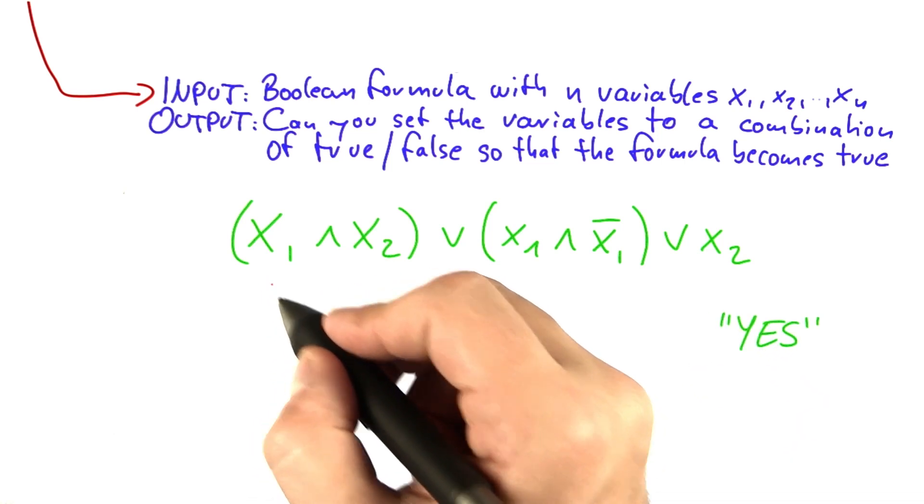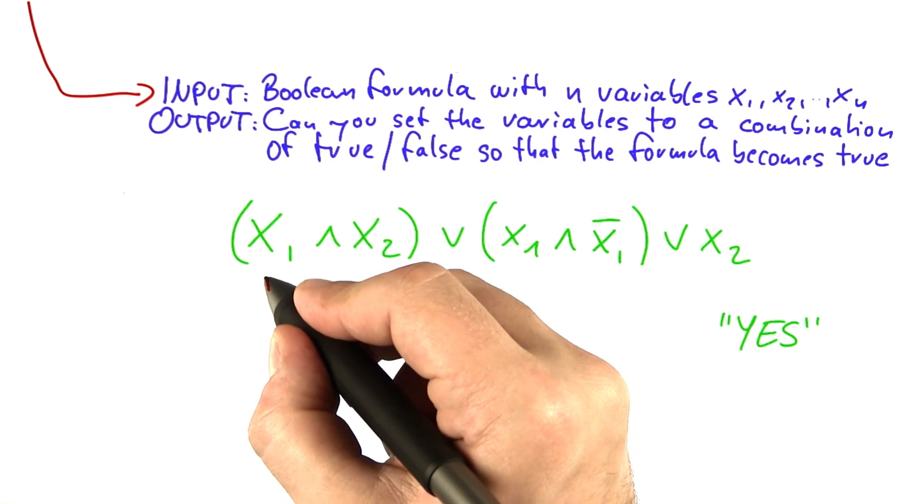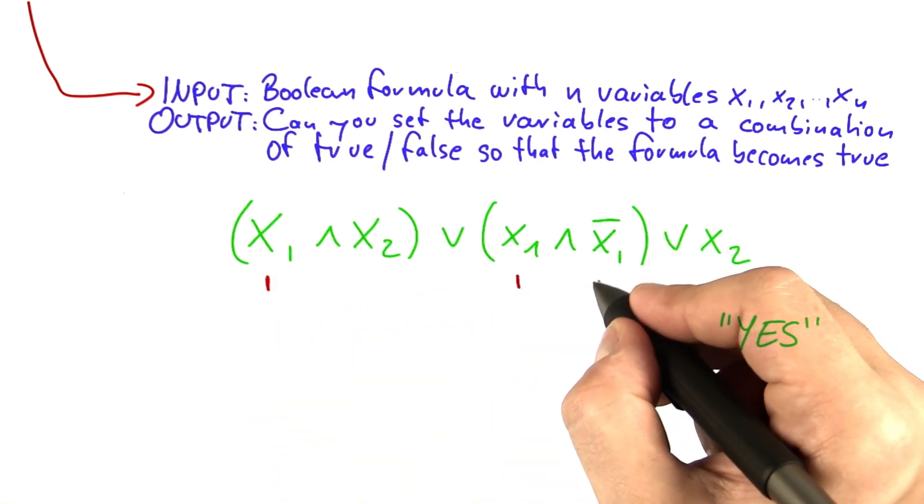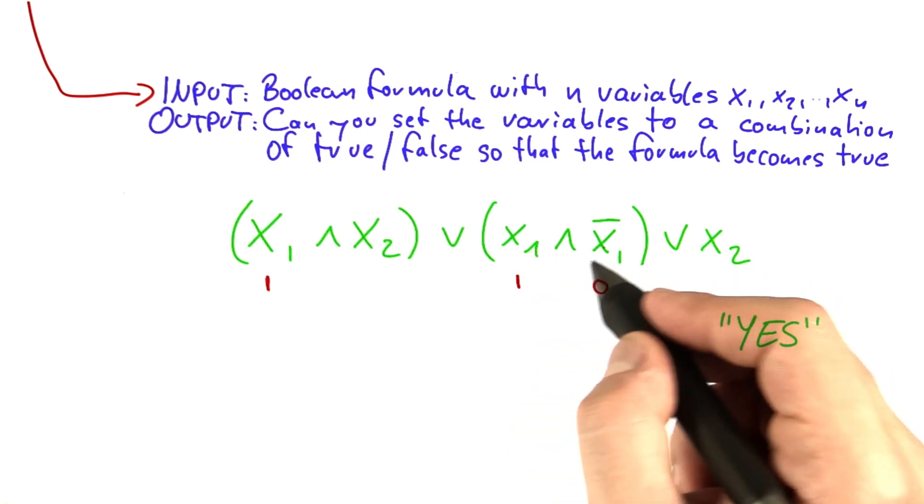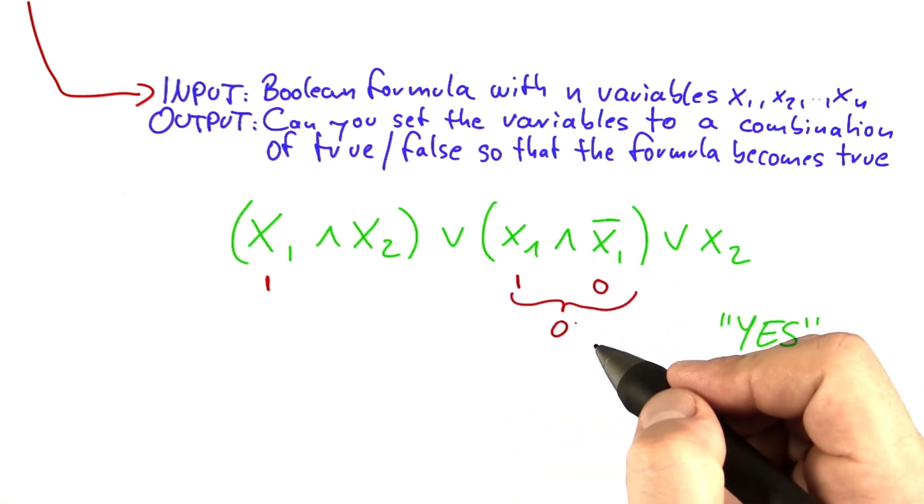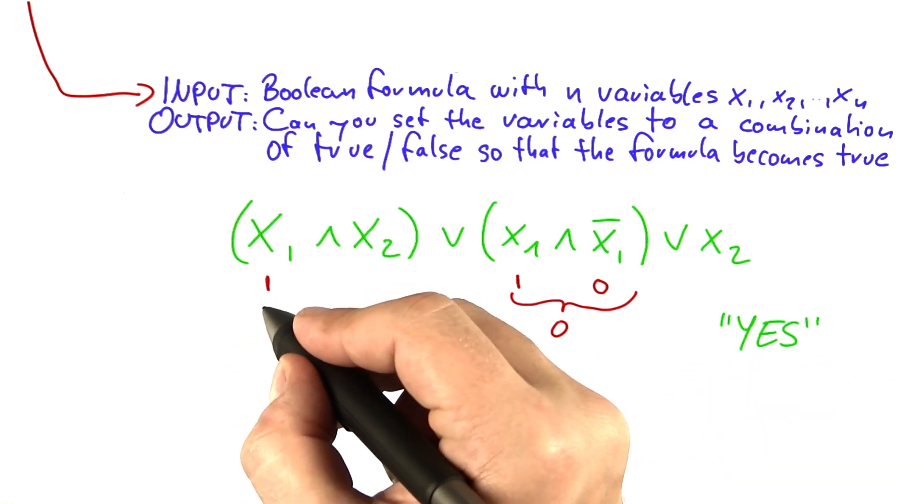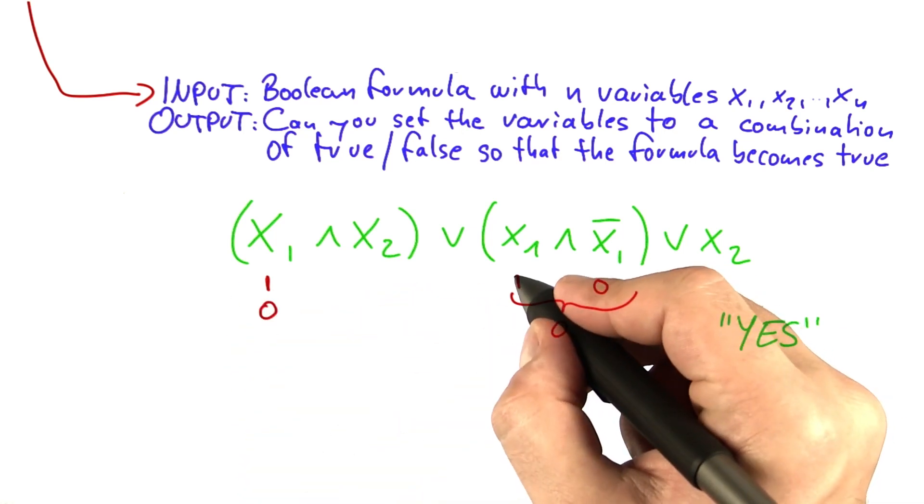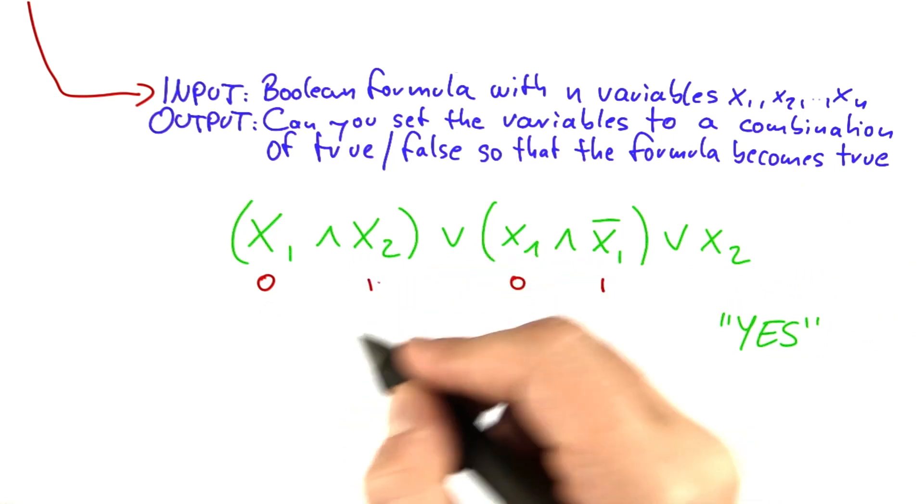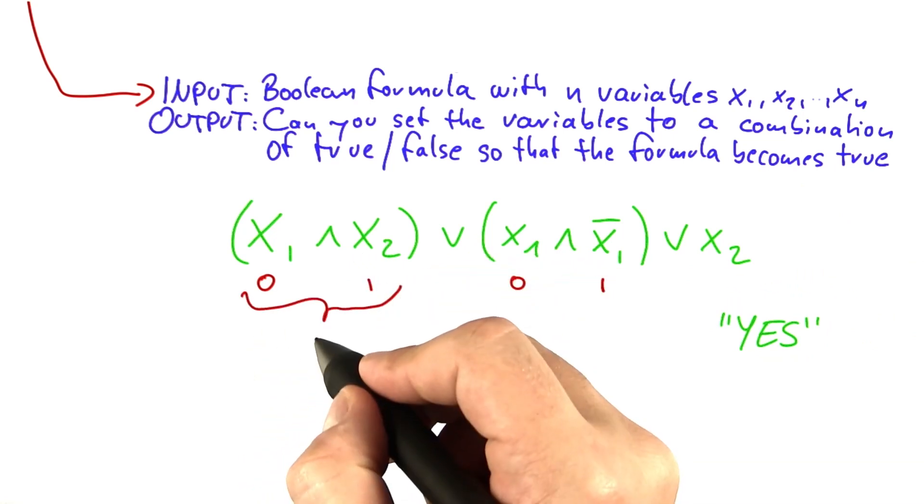x1 unfortunately doesn't really help here. So if you set x1 to true for example, this would also be true. And here you have not x1, so x1 and not x1, that would evaluate to 0. If you set x1 to 0, then you have it the other way around.